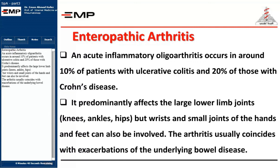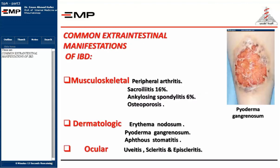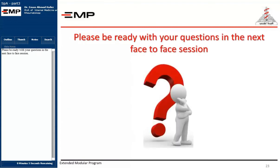It predominantly affects the large lower limb joints — knees, ankles, and hips — though wrists and small joints of the hands and feet can also be involved. The arthritis usually coincides with exacerbations of the underlying bowel disease, with no gender predilection. It has a familial association and an approximately 30% association with HLA-B27 expression. These are common extra-intestinal manifestations of IBD. Treatment is aimed at controlling GIT symptoms and disease progression. Please be ready with your questions in the next face-to-face session. Thank you.